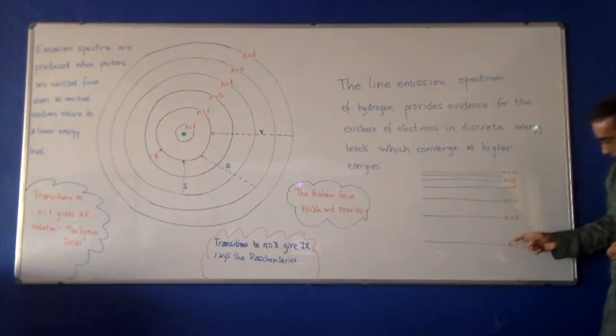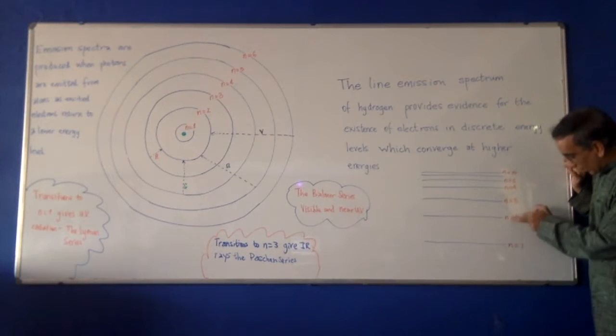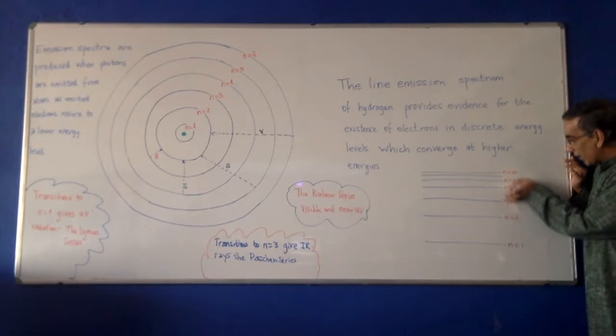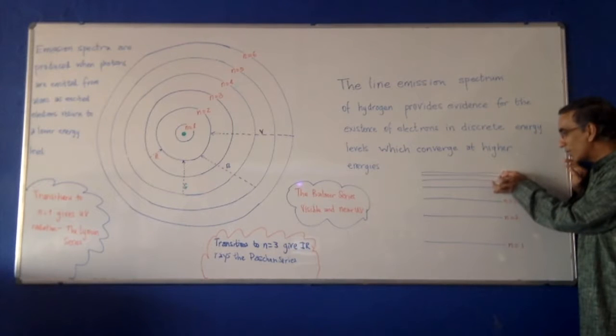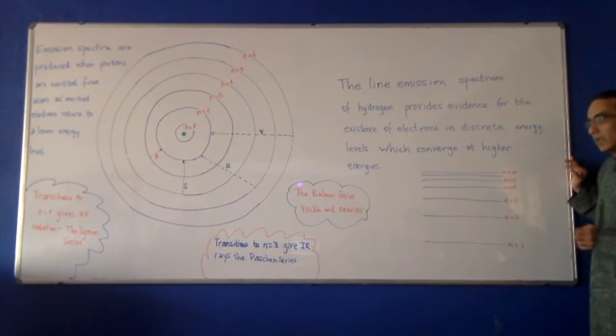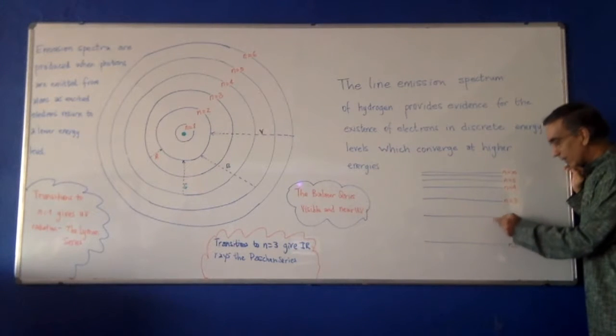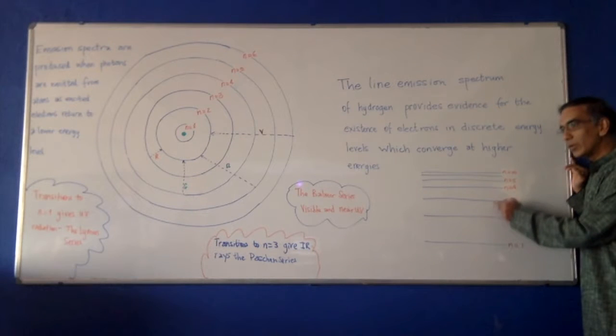These energy levels have been found that the difference in energy between one and two is this much. And as you go higher and higher up, the difference in energy between levels becomes less. The difference in this energy here can be calculated. How much energy is used to move from level one to level two or from level two to level three.